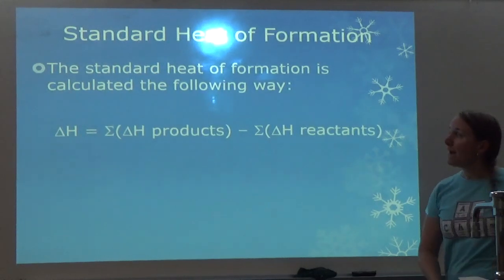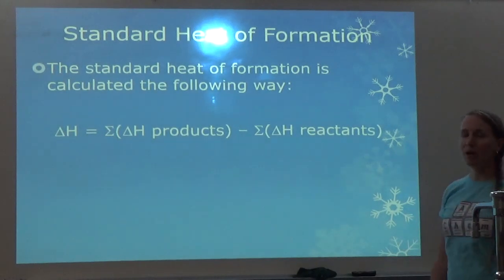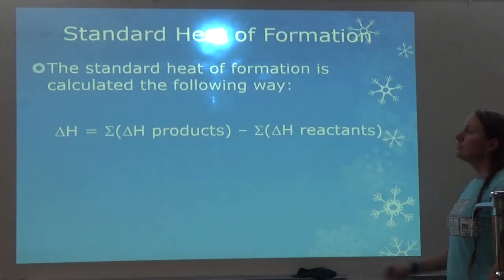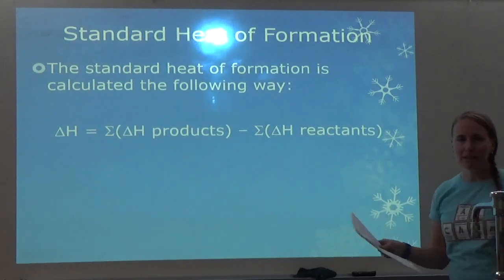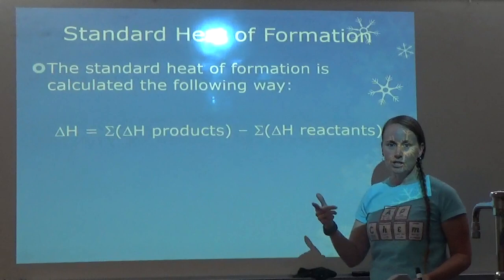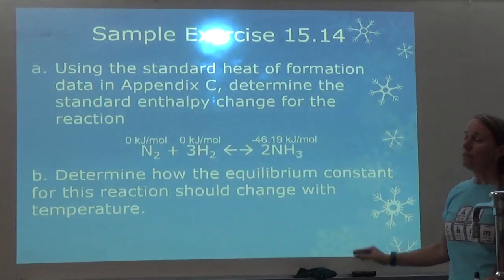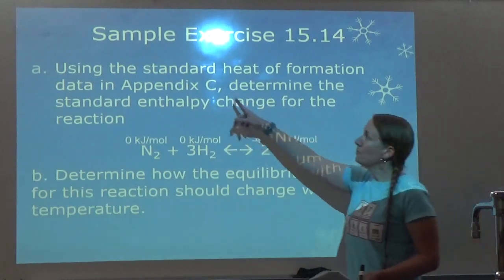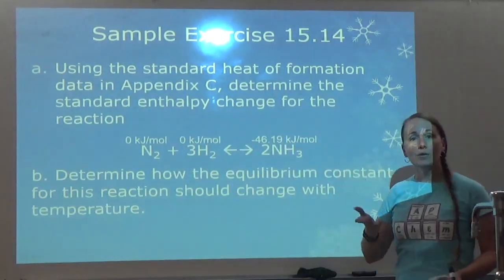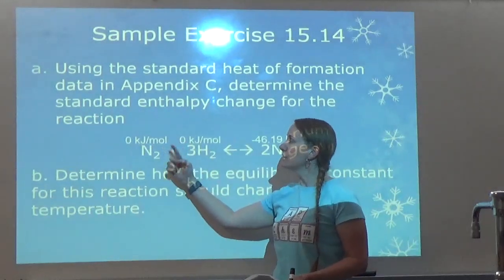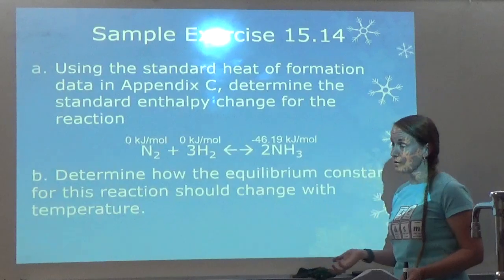Next we're going to go back to delta H. We've done delta H before with our bond enthalpies. It's always products minus reactants — that's a summation, so we add the products and subtract the reactants. For the first problem, the numbers are pulled from Appendix C. Remember, sometimes delta H for an element in its natural state is zero.